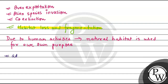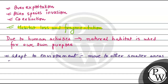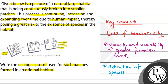Now, if we remove forests and natural habitat, then species need to adapt to the environment. They will move to other smaller areas, because of which all organisms and all species start coming into a small area. This is why we see smaller patches of habitat, because the rest of the places have been destroyed. This is how habitat loss occurs because of fragmentation, breaking into fragments. So the ecological term used here is Habitat Loss and Fragmentation. Best of luck, thank you.